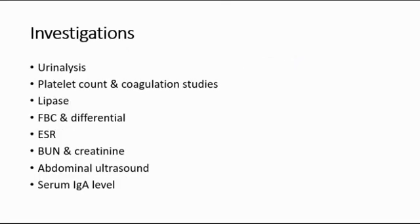For investigations, we can do urinalysis to look for hematuria and proteinuria, seen in 10–20% of patients. We can do platelet count and coagulation studies — platelet count should be either normal or elevated in HSP; it must not be low. This is important to differentiate from immune thrombocytopenic purpura (ITP), where if the platelet count is normal, we can rule out ITP, since ITP typically presents with low platelets.